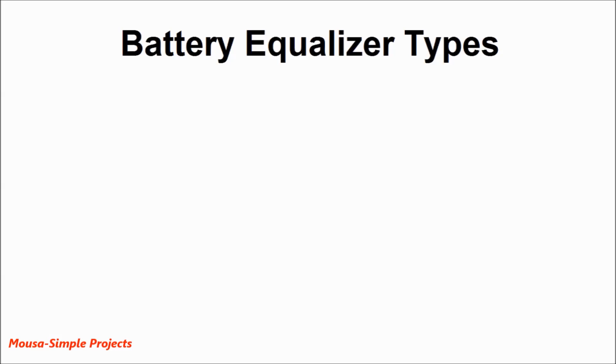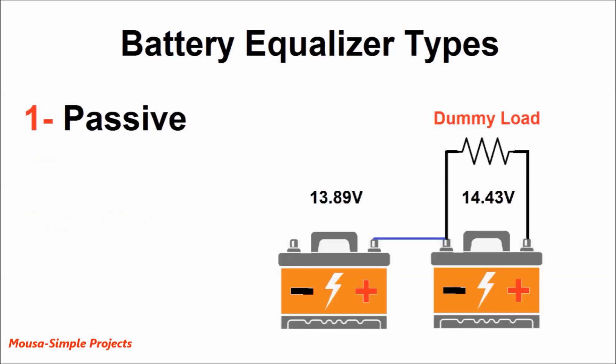There are two different types of battery equalizer: passive and active. The passive type is very simple; it just discharges the battery with higher voltage until the voltage of both batteries become exactly the same.